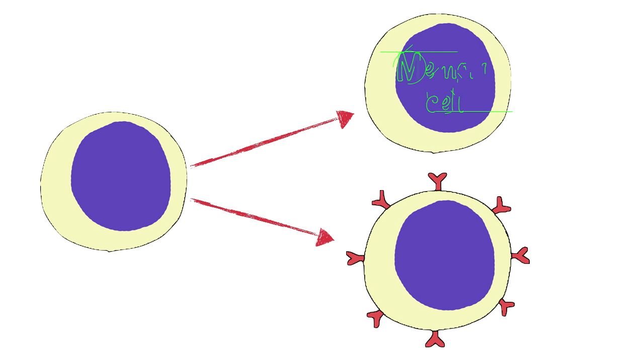But the other thing that will happen is memory cells will be produced, and memory cells are this version of the lymphocyte that stick around in the body and can recognize the pathogen if it ever comes back again.